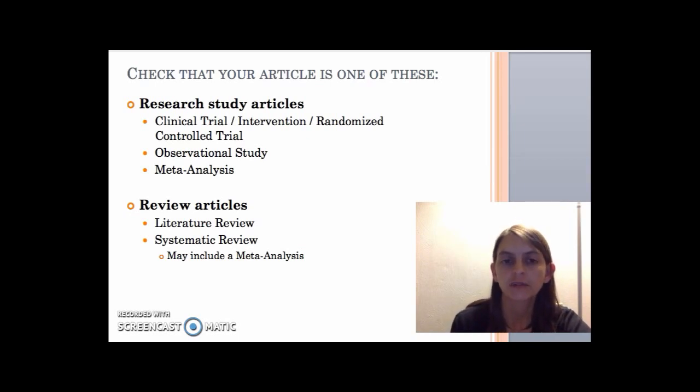So another type of research article you might find are review articles. And these may be called also literature reviews. You might come across one called a systematic review. This is a very substantial literature review that takes a systematic approach to searching the literature, choosing eligibility criteria for studies ahead of time, selecting the studies, extracting data. It's quite a larger process than a typical literature review. And a systematic review might include a meta-analysis.